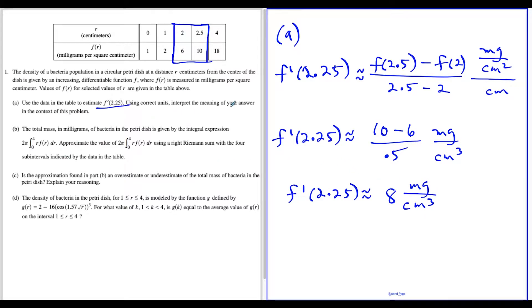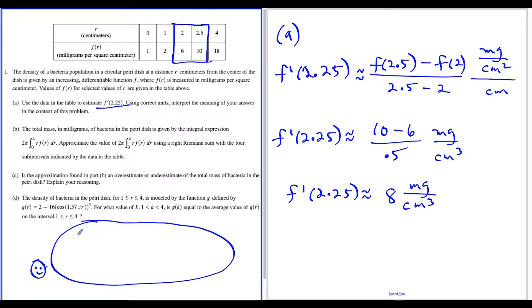Now the last thing we have to do is explain what this means in the context of the problem. These questions can be tricky when you have to explain, but just think about what we found. In general, if f prime of 2.25 is approximately 8, which is positive, that means f is increasing at r equals 2.25. Anytime you have a positive derivative, your function is increasing at that value.